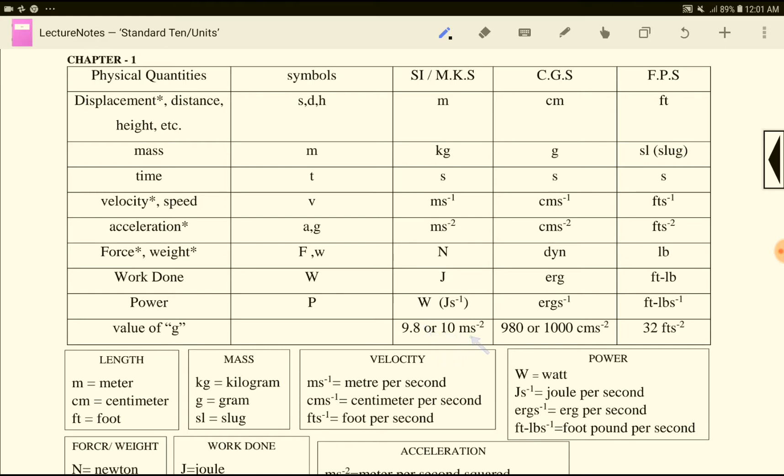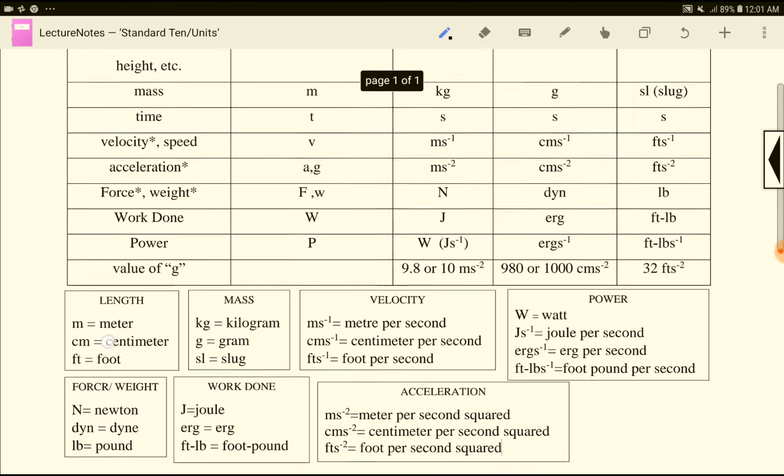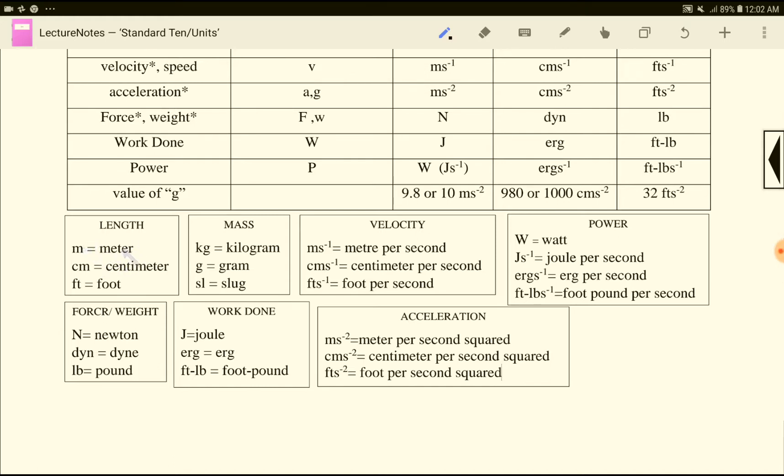Acceleration due to gravity, G, has the value 9.8 meter per second squared. In CGS system it's 980 or 1000 centimeter per second squared. In FPS system, G is 32 foot per second squared. G values: meter, centimeter, foot - different measures. Kilogram, gram, slug for mass.